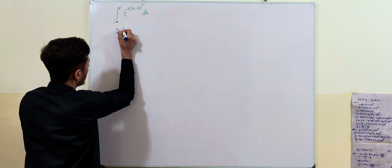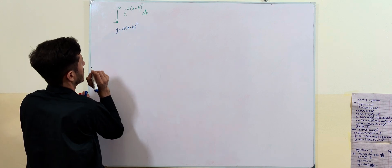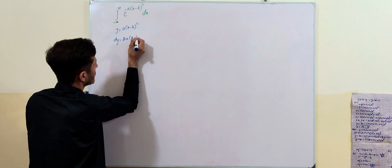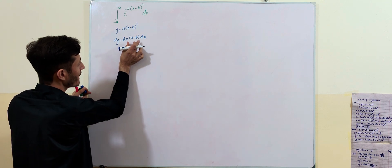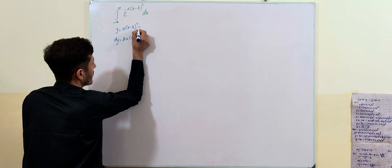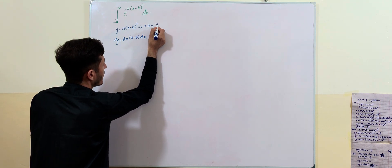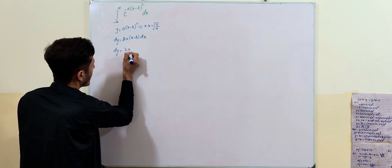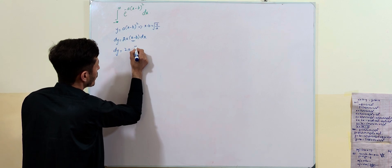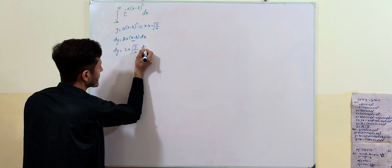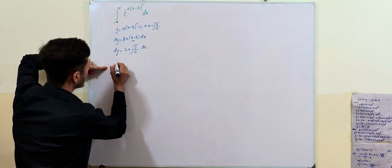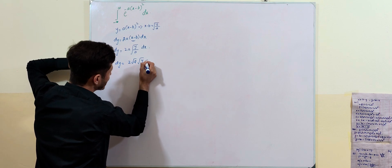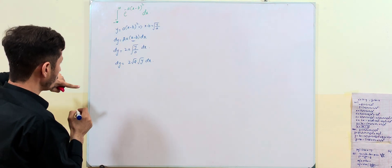The substitution here is y equals (ax minus b) squared, so dy becomes 2(x minus b) dx. From here, x minus b can be replaced: x minus b equals the square root of (y/a), so dy equals 2 times the square root of a times the square root of y, times dx.